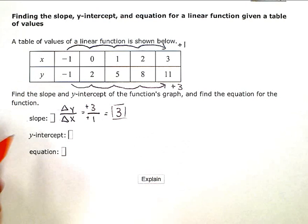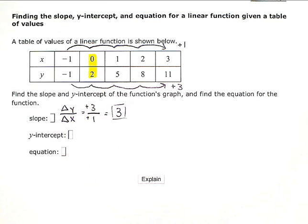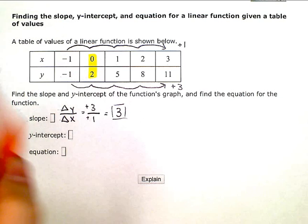Now y-intercept. When you look at a table, zeros in a table are a dead giveaway for intercepts. And I have a 0 right there in that column. So when x is 0, y is 2. This is my y-intercept right there, paired with the 0.